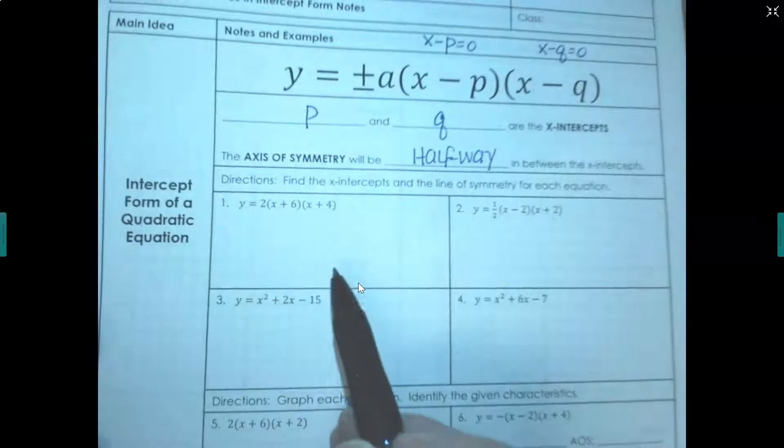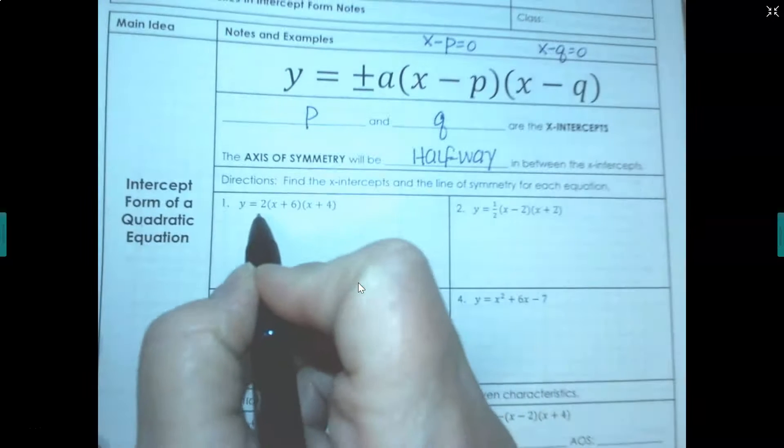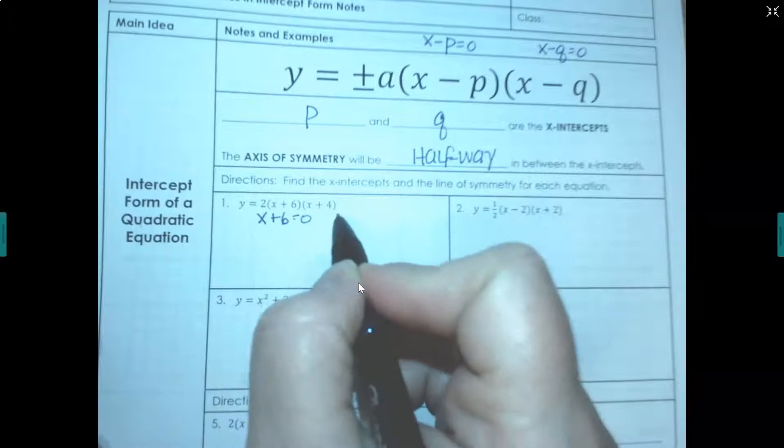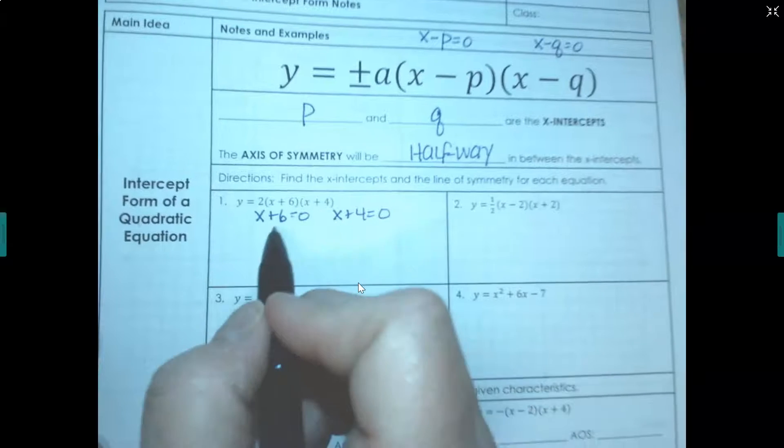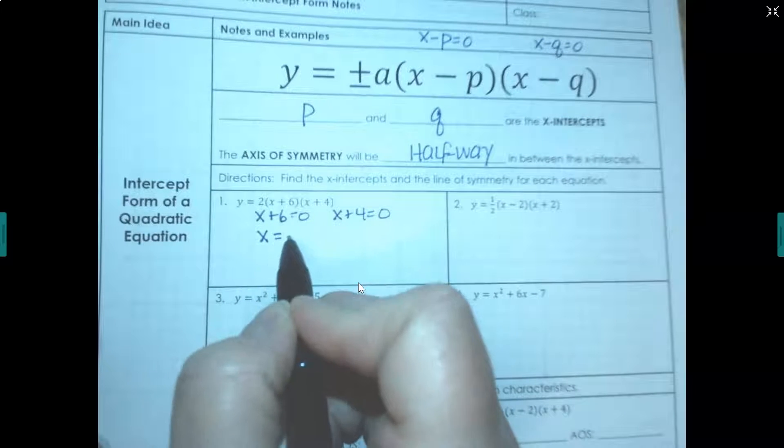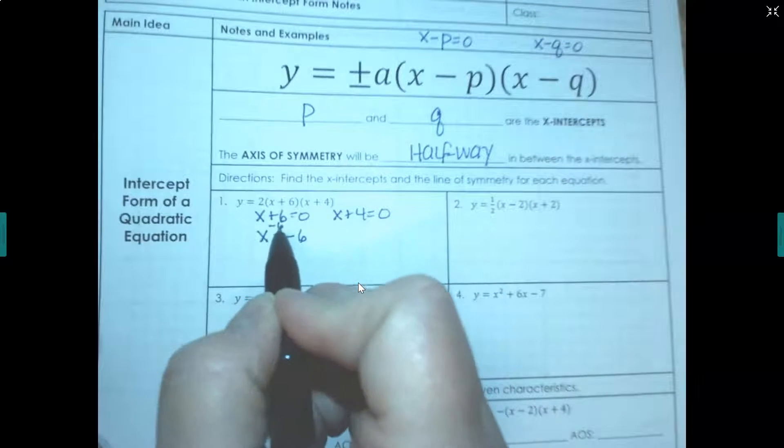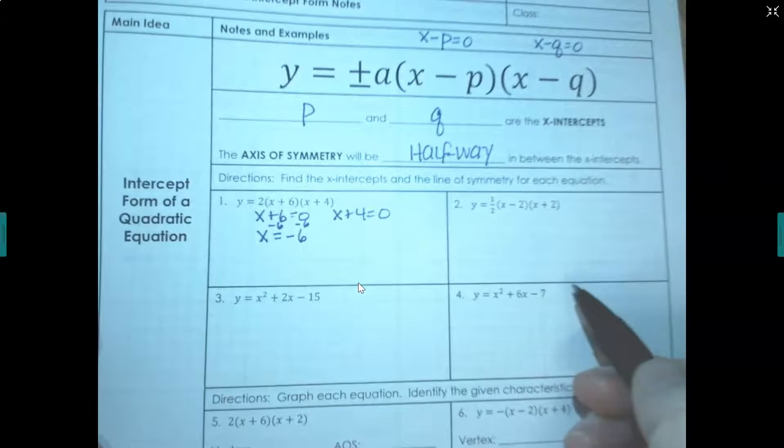I already know what the x-intercepts are going to be because I'm going to use the zero product property and I'm going to solve each of these. So for this to be equal to zero, my x value would have to equal negative 6, and really what I did is I subtracted 6 from both sides.